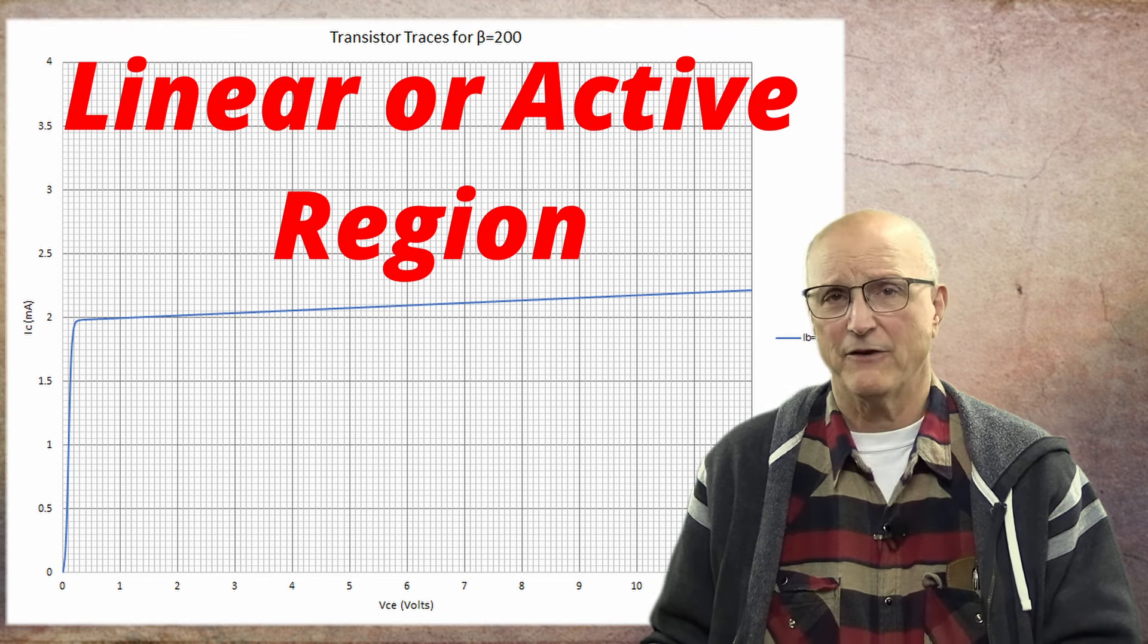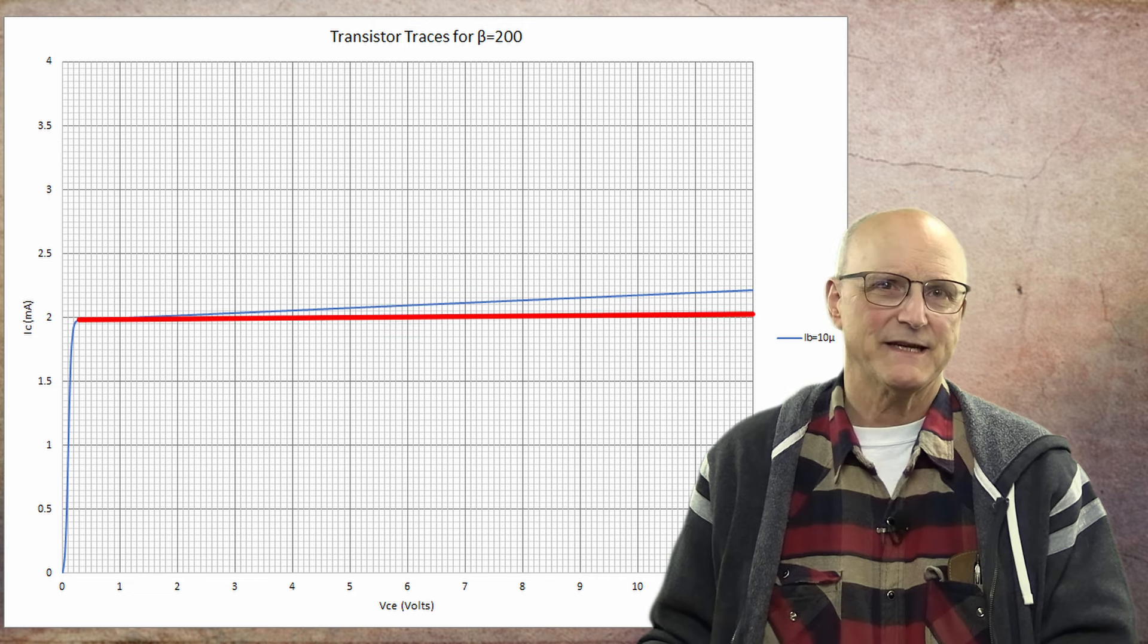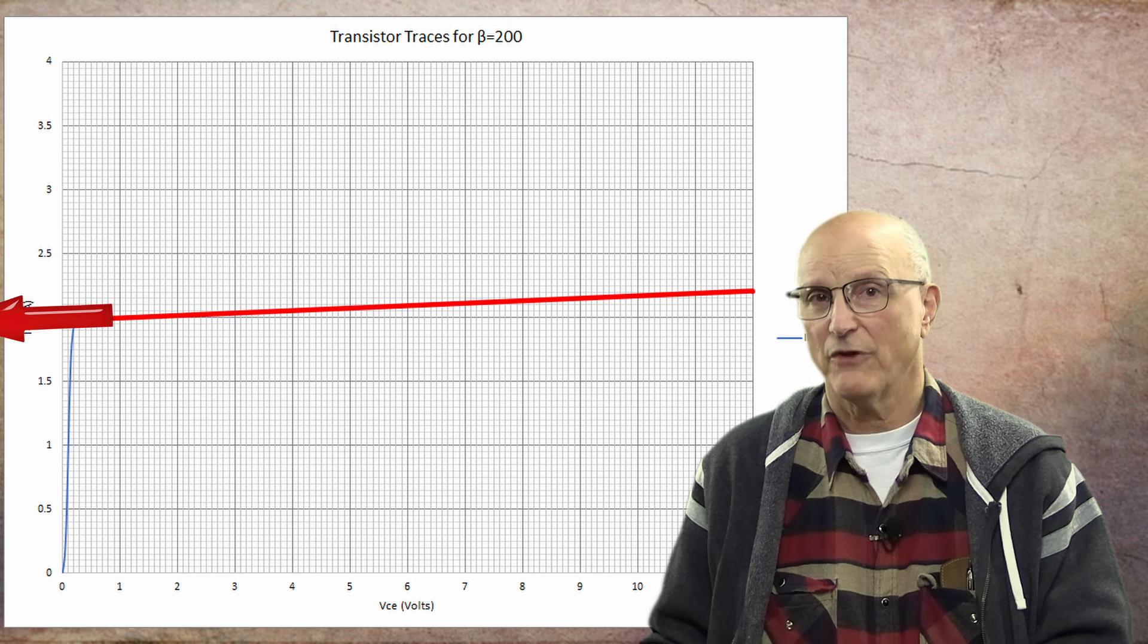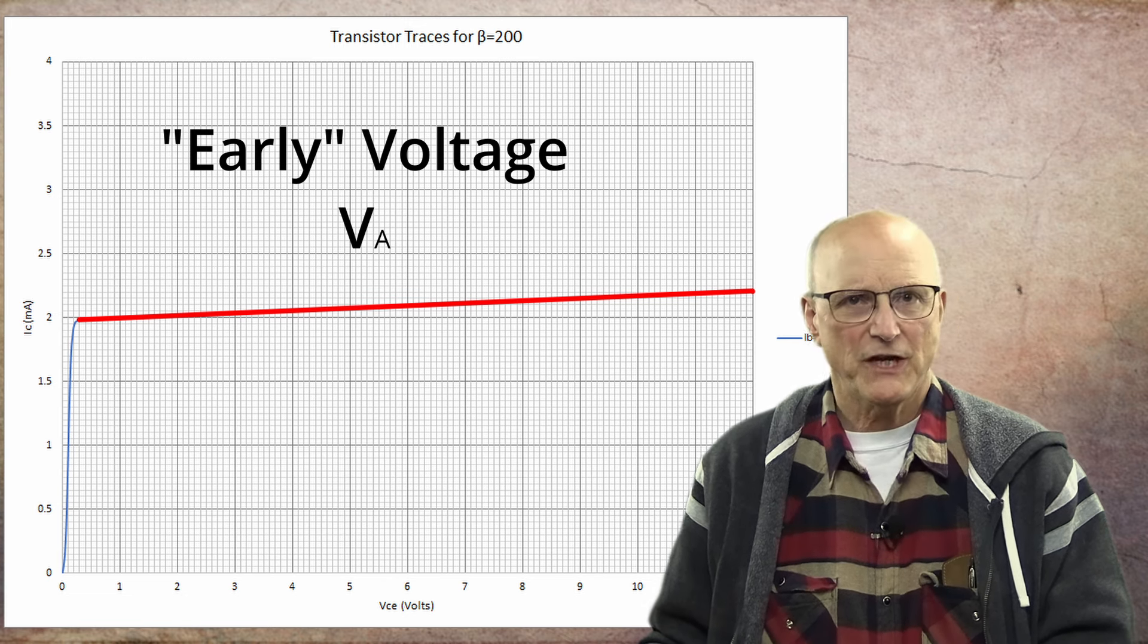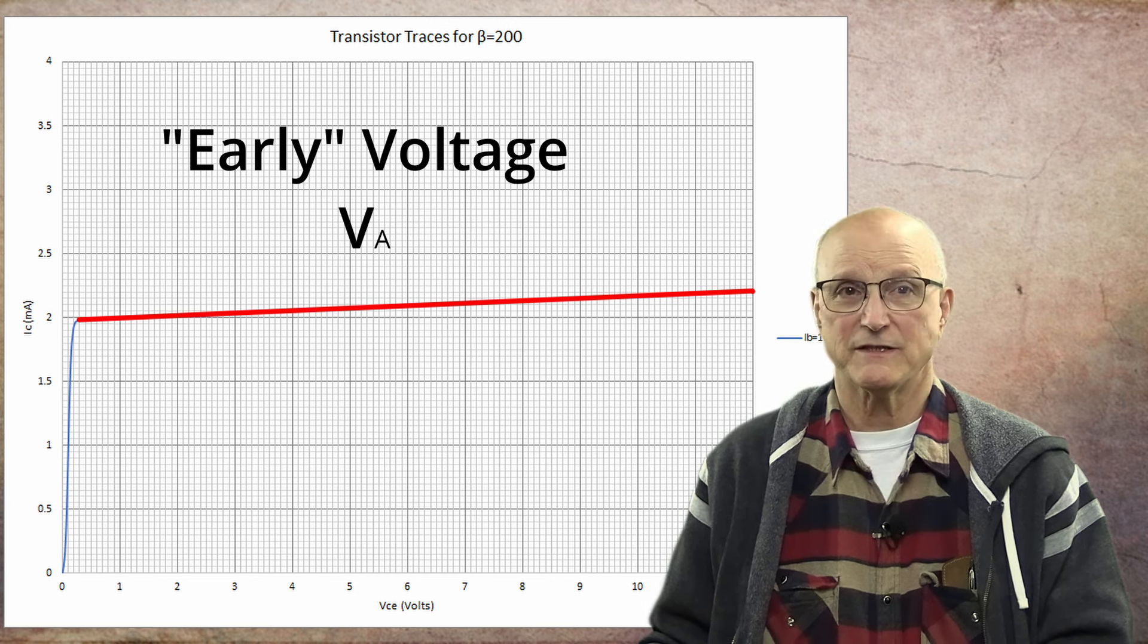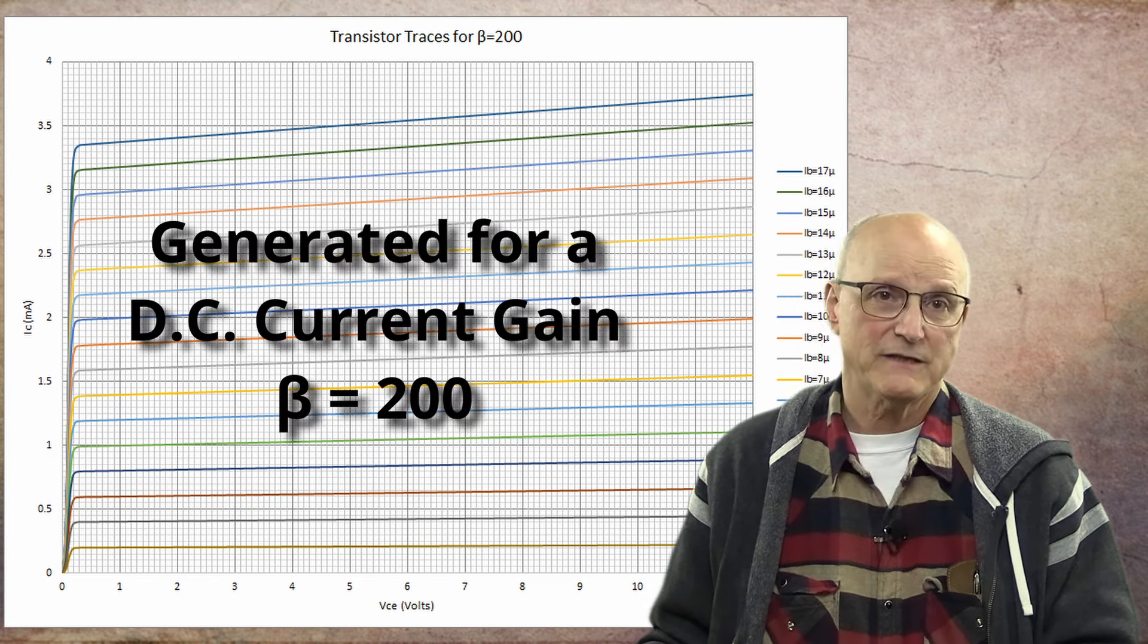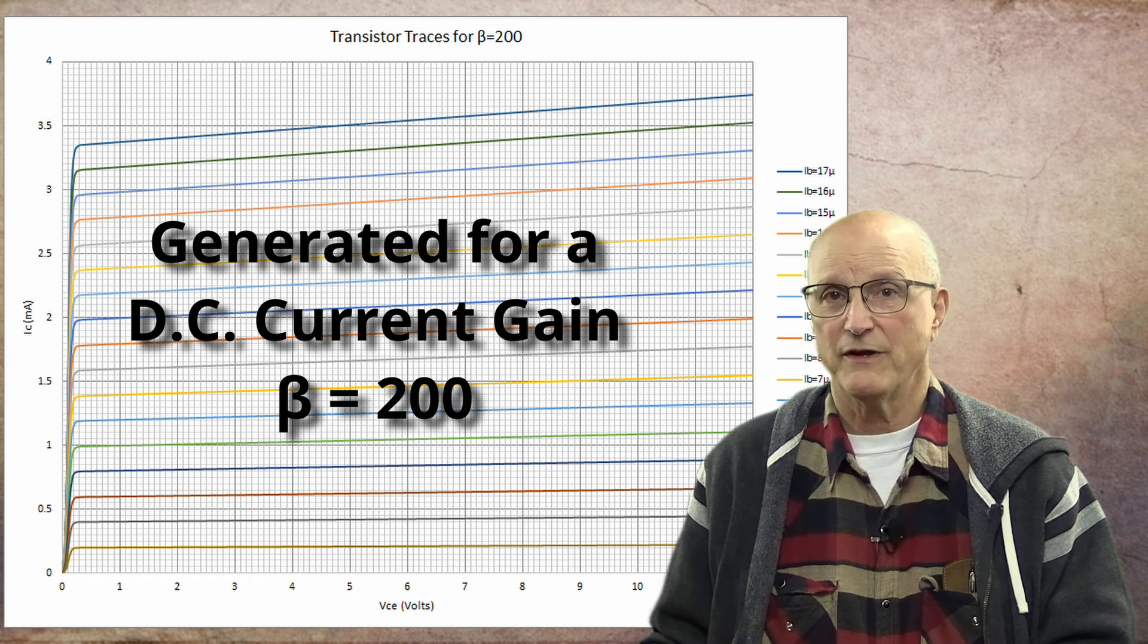If this were perfectly linear, then the line from here would be perfectly horizontal. But it's not. It has a slight upward slope. If we were to follow this slope back past the 0 volt mark until the collector current equals 0, we arrive at what is called the early voltage, or VA. This changes with base current, but averages out to about 100 volts for a silicon transistor, which we use in our analysis and design. Here is the family of transistor curves we are going to be using. I generated this family specifically for a DC current gain of 200 using a 2N3904 transistor.